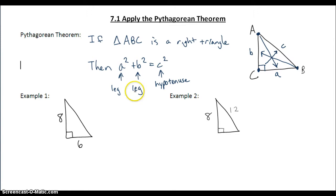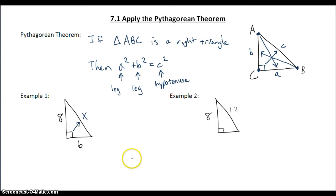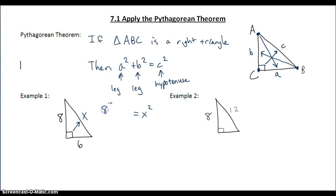Let's apply this theorem. In example one, our missing side is the hypotenuse — it's the side opposite the right angle. So I'm going to call that missing side x. To solve for x, I'm going to plug x in for c, and I'm going to plug 8 and 6 in for a and b. It doesn't make a difference what order my legs go in; the only thing I need to worry about is that my hypotenuse is c.